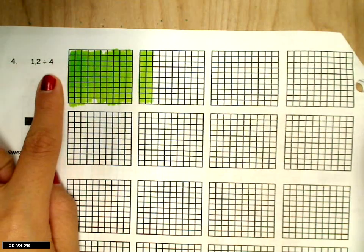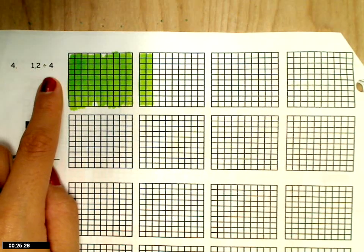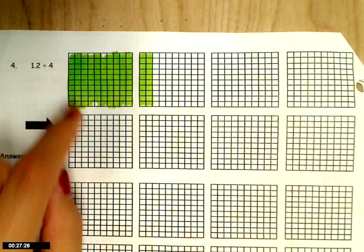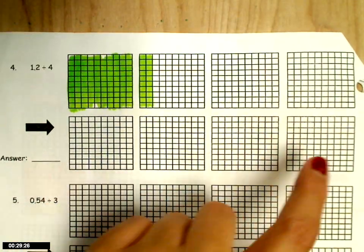And then this second number tells me how many groups I'm going to have. So I'll use each one of these squares as its own group.